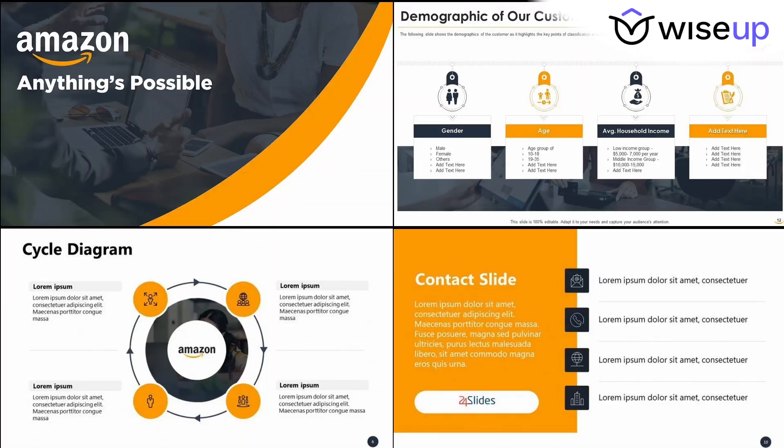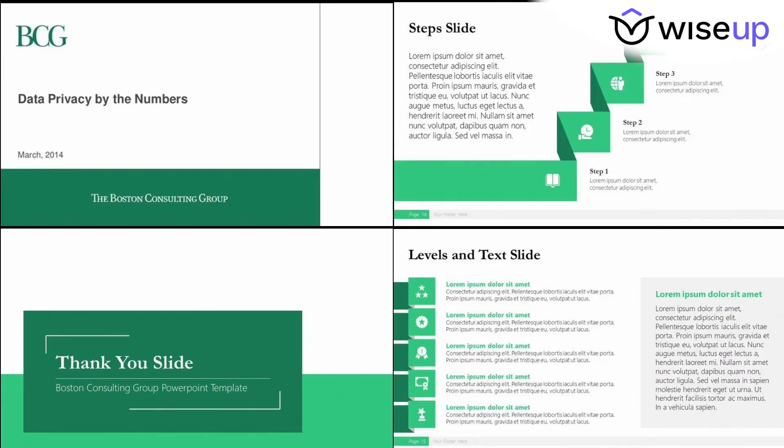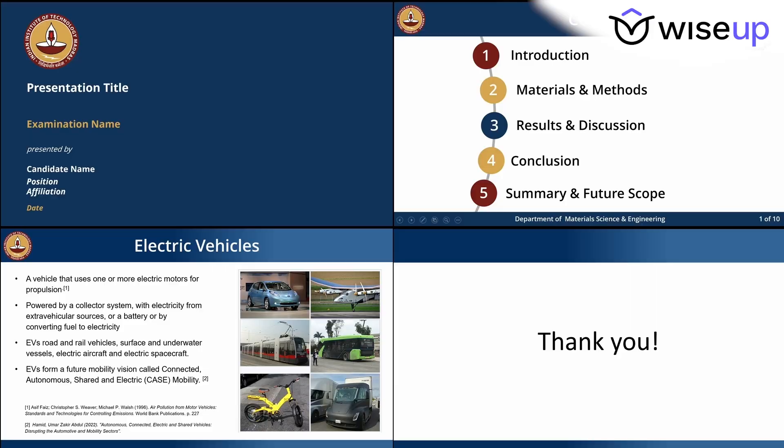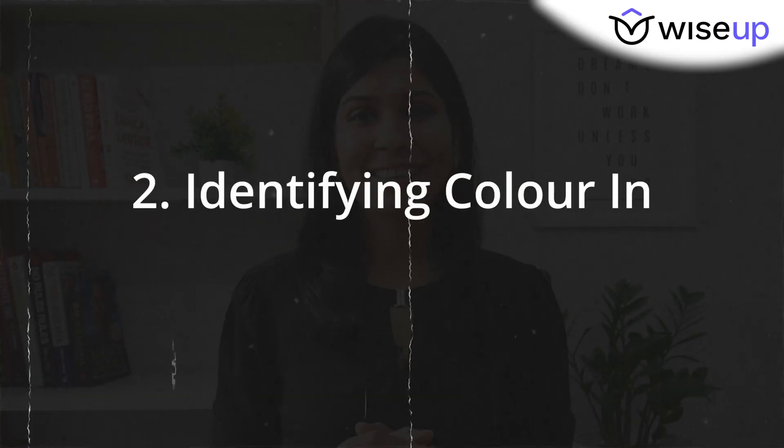For example, if you work for Amazon then your color theme could look like this, or if you work for BCG then your color scheme could look like this, or if you are studying at a college like IIT Madras then your color theme could look something like this. But if you're not representing any brand or company, don't worry — you can still create a color theme, and I'll show you how very soon.